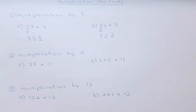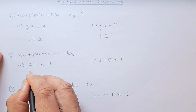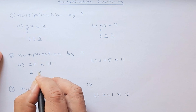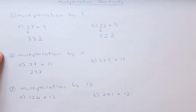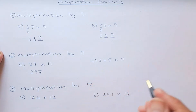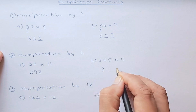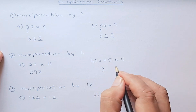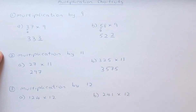Now we're going to multiply by 11 — you should be familiar with this. For 27 times 11, the 2 and 7 remain on the outside, and you just add 2 plus 7 in the middle, so the answer is 297. For 325 times 11, 3 and 5 remain on the outside, 2 plus 5 is 7, and 3 plus 2 is 5, so the answer is 3,575.